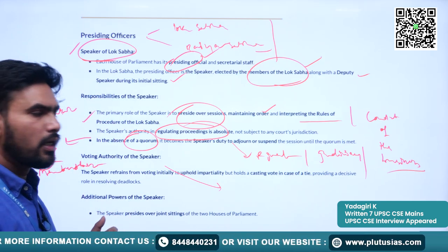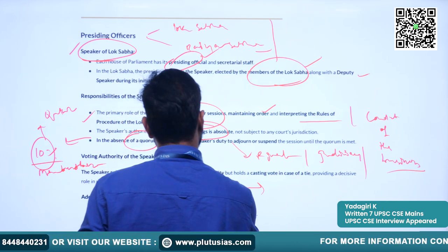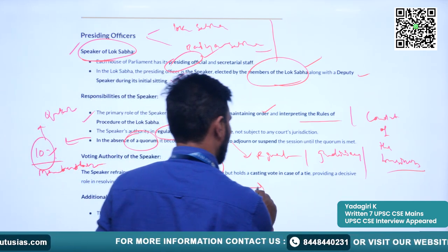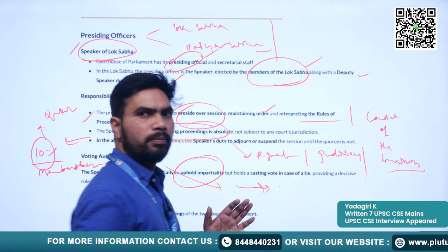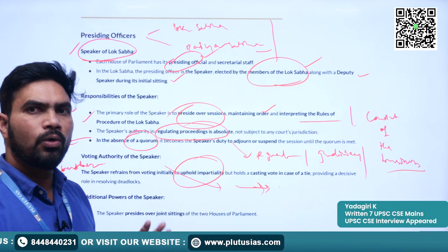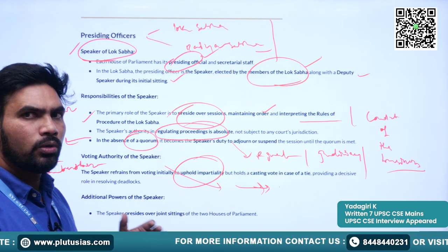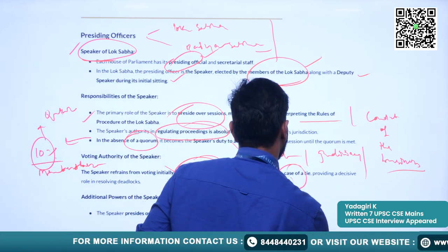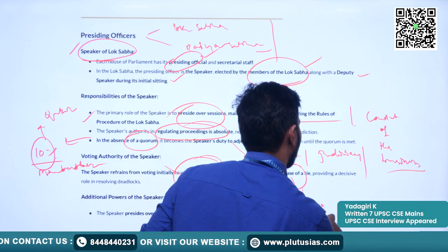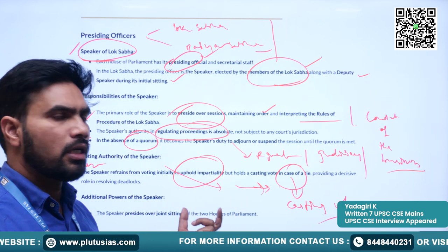Now we will understand the voting rights of the speaker. In the first instance, the speaker does not vote — this is to uphold the impartiality of the proceedings of the house. If there is a tie — meaning equal votes for and against a bill — to break the tie, the speaker uses his casting vote. To break a tie, the speaker can use his vote, which is called the casting vote.